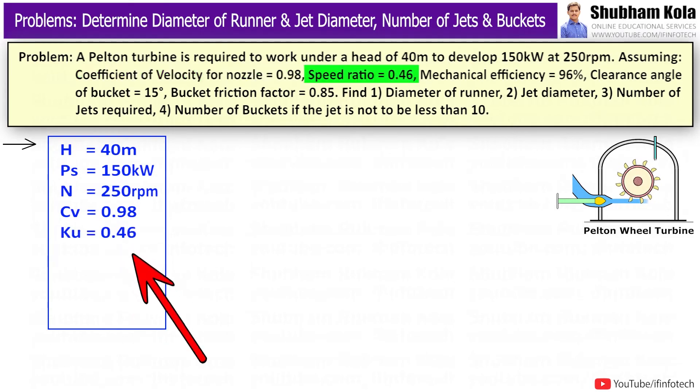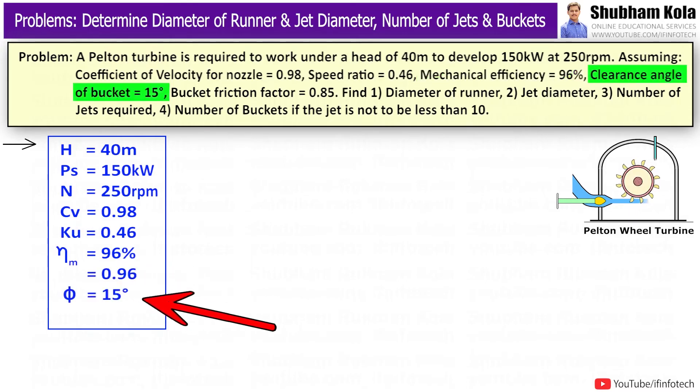Speed ratio Ku equal to 0.46, which is the ratio of bucket speed u divided by velocity of jet V1. Here mechanical efficiency η is 96%, that is equal to 0.96, and blade angle φ is 15°, bucket friction factor K equal to 0.85.